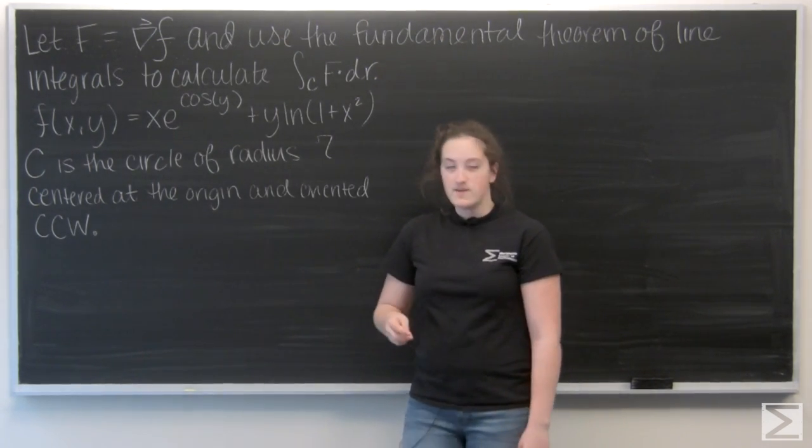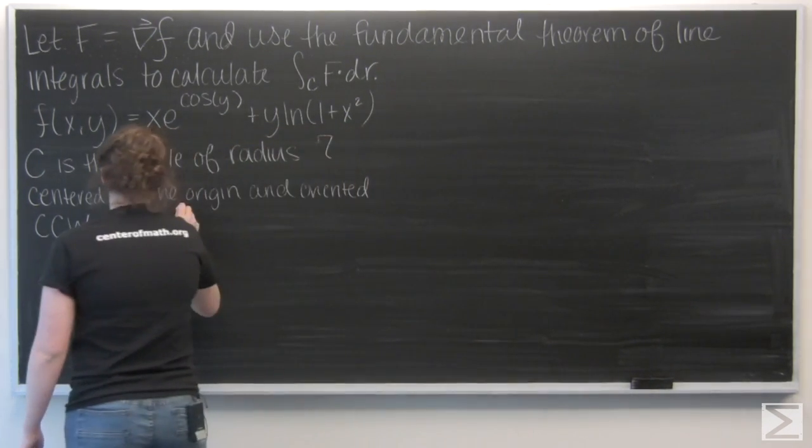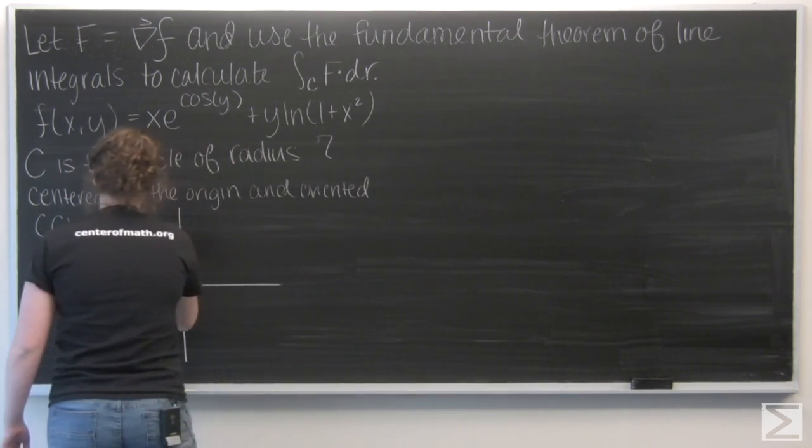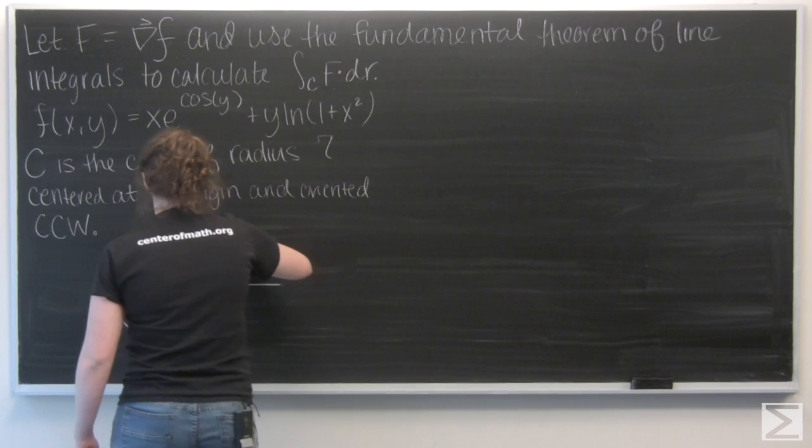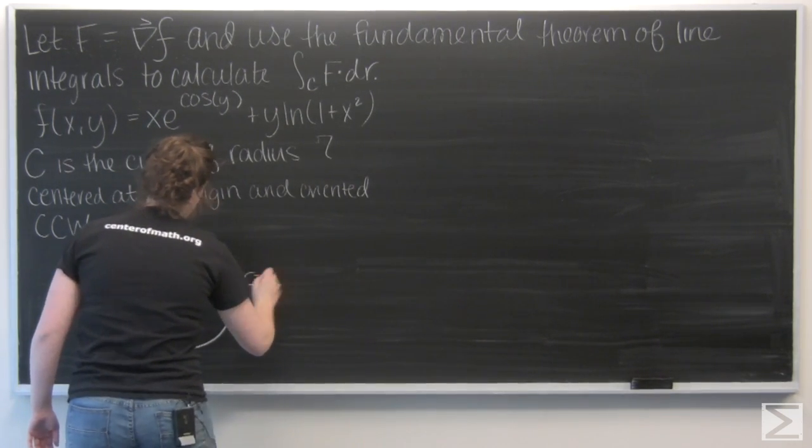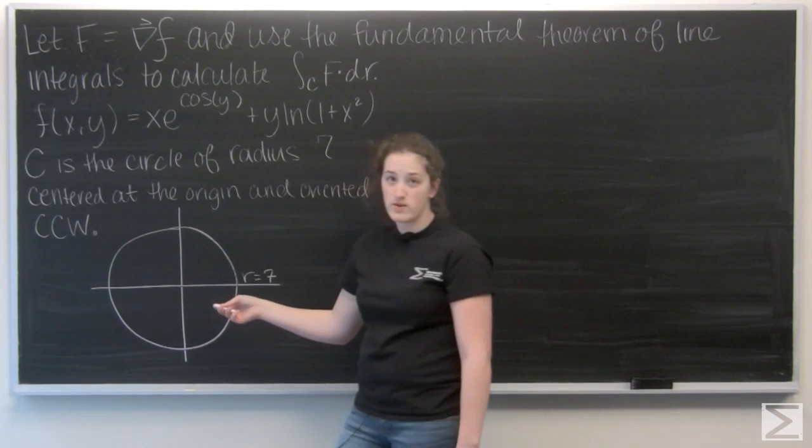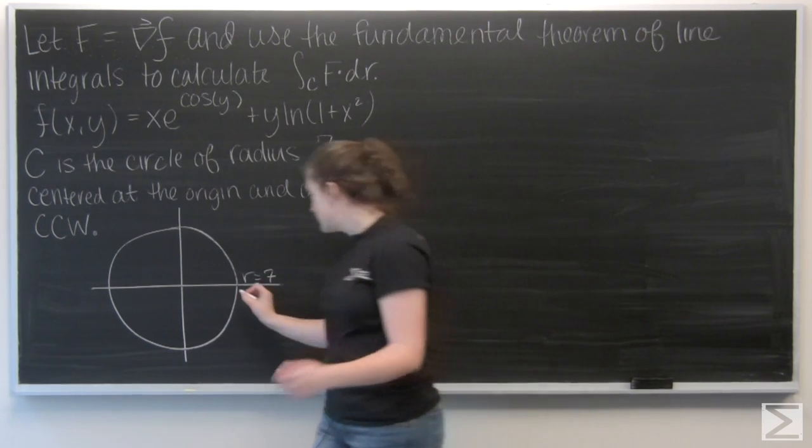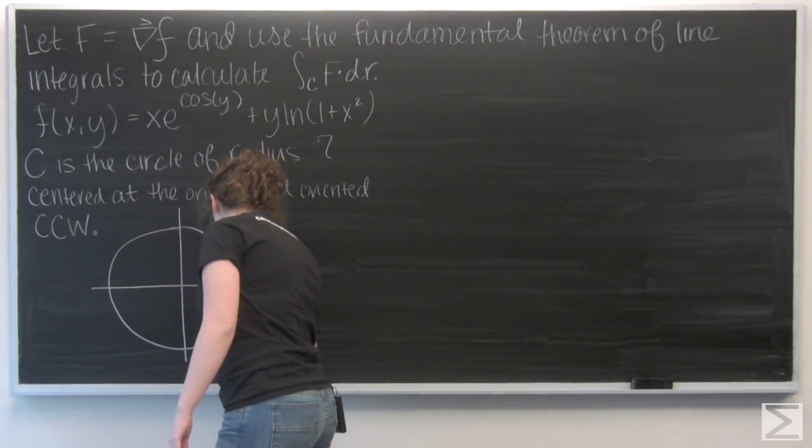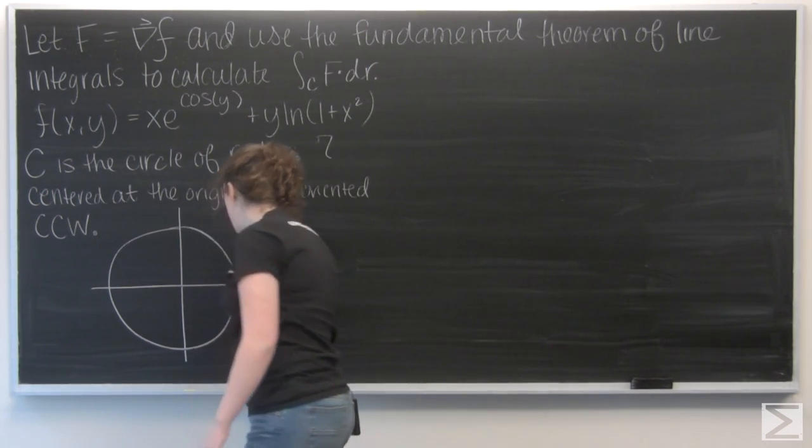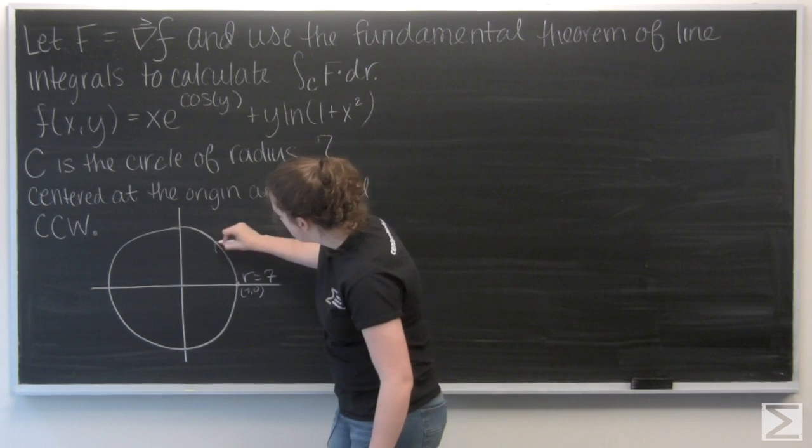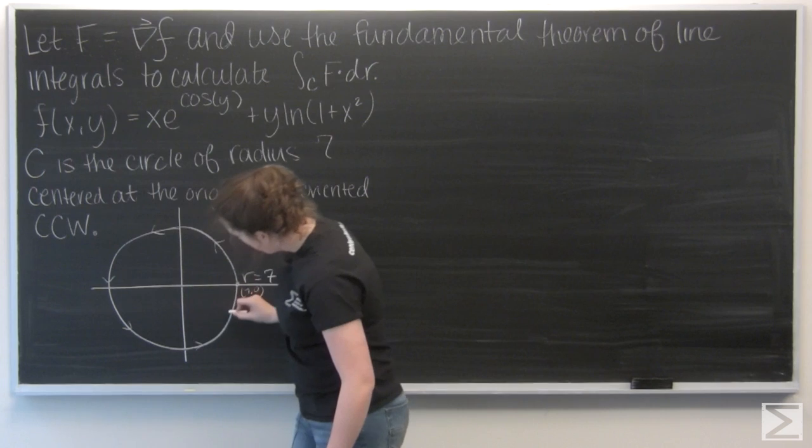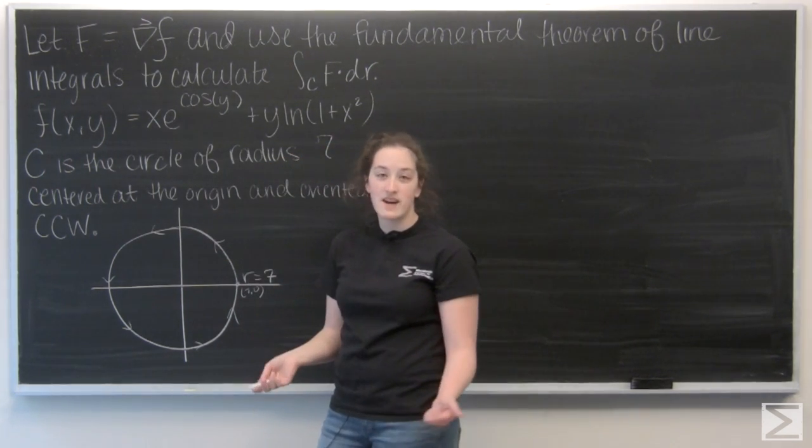So let's go ahead and draw C. I have a circle centered at the origin and it starts at 7,0 and goes around counterclockwise and then ends at 7,0.